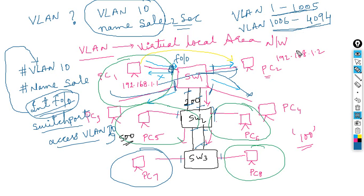We will do the lab in the next class — this was just a VLAN overview. For interviews, remember: VLAN is used to divide a single broadcast domain into multiple broadcast domains. One physical switch is divided virtually with the help of VLAN. See you in the next class, thank you, bye.